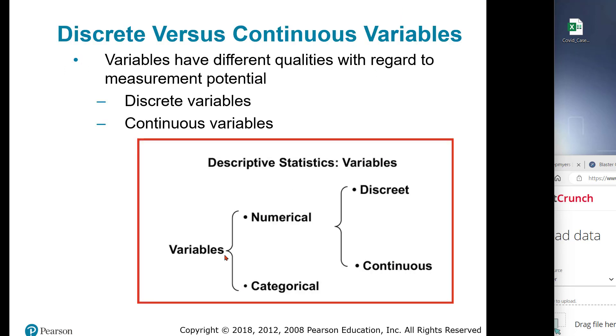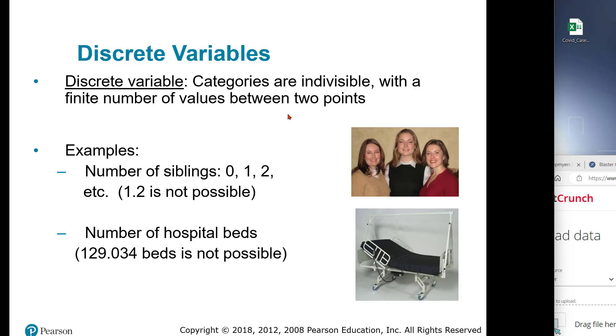To do this, we must look at the qualities of our variables. Numerical variables can be discrete or they can be continuous and that depends on the data or the measurement level. A discrete variable is something that's finite. It's a counting number. You can't have half a patient. You either have none, which is 0, 1, 2, etc. Siblings is a discrete variable. It is a whole number, like beds in a hospital. It has to be discrete. You can't have half of a hospital bed.